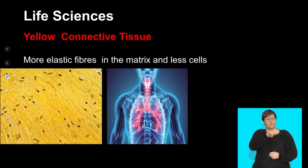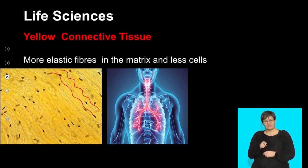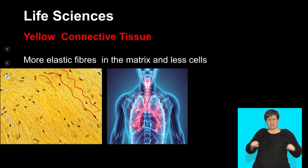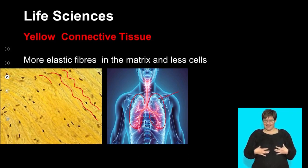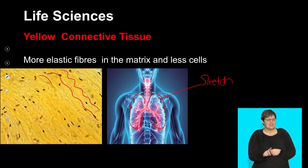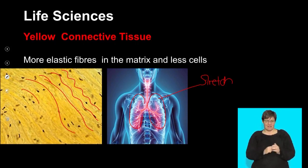Look at this — it's yellow elastic tissue, yellow because it's been stained. These are elastic fibers — they are wavy and they can expand and stretch and return. Look where I've placed them: I put them in my lungs, because my lungs need to inhale and exhale — they need to stretch and then return. So again, lots of fibers, less matrix, and those cells in between are examples of the cells found in this tissue.